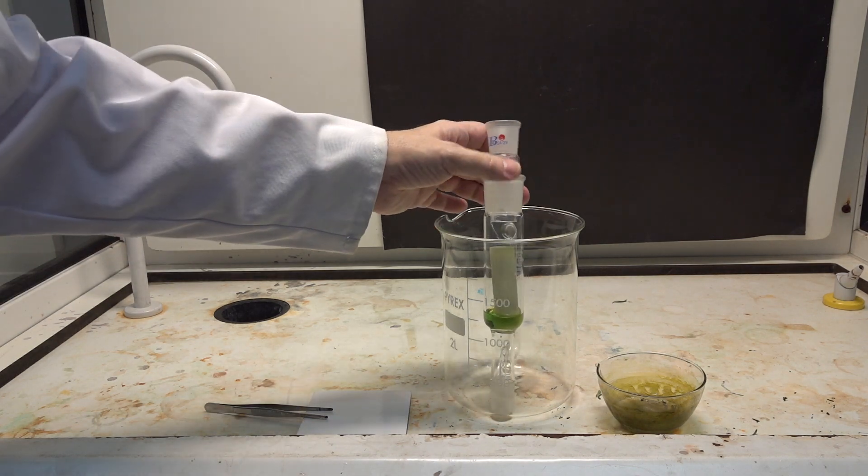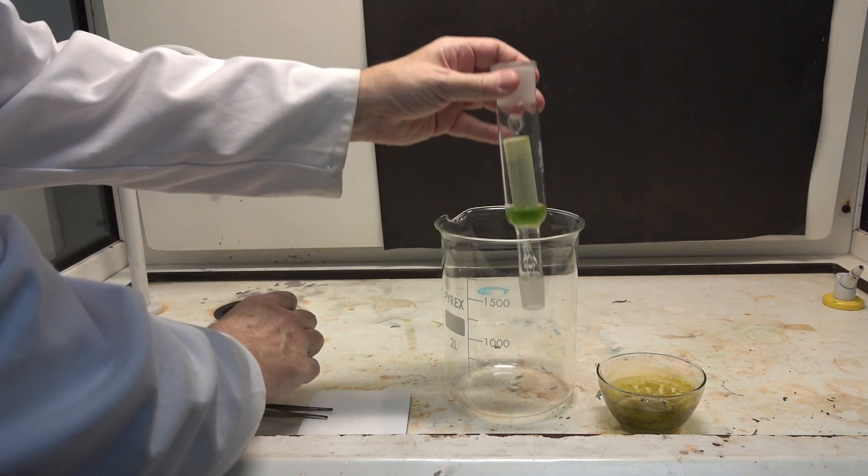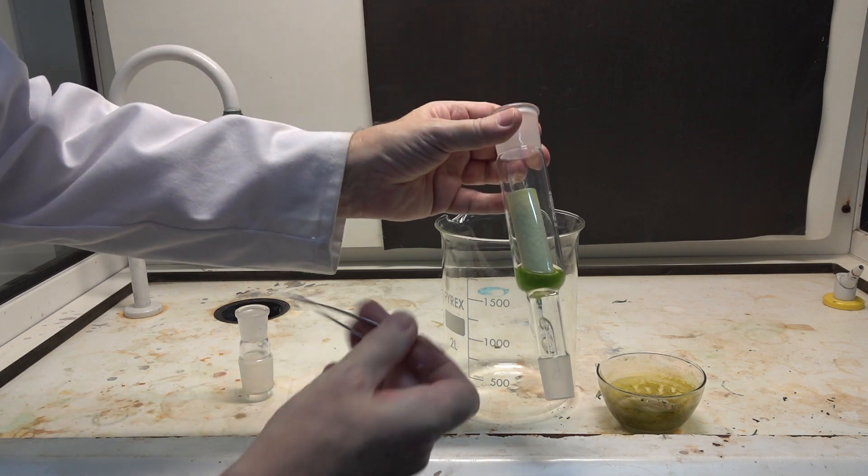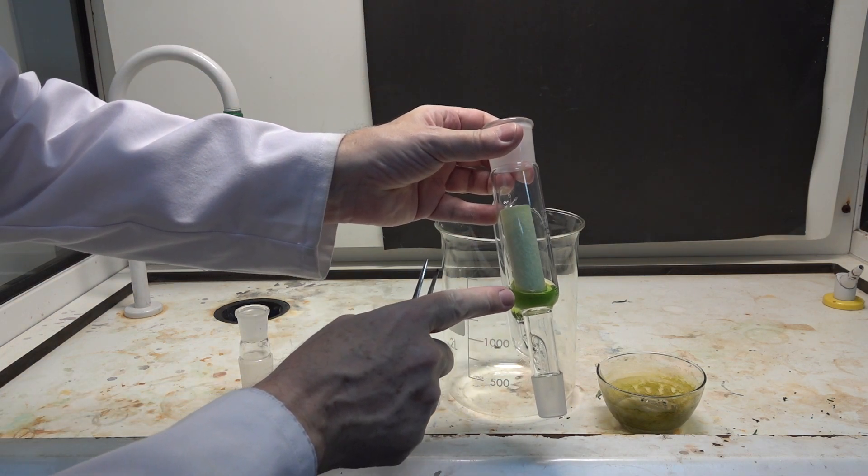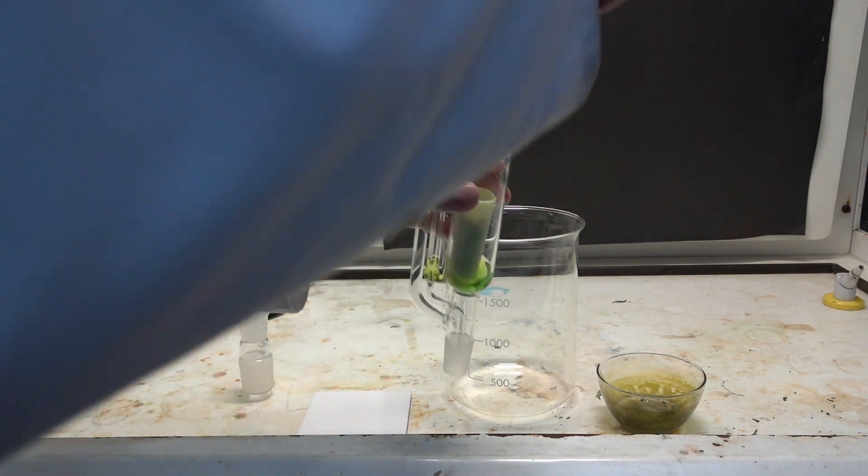In the Soxhlet extractor itself, you can see where we just poured off the ethanol. The ethanol was in this state when we poured it off into the evaporating basin before leaving it overnight.